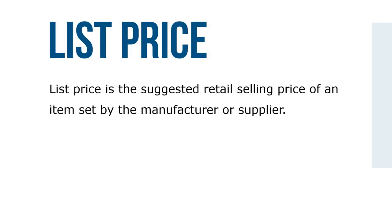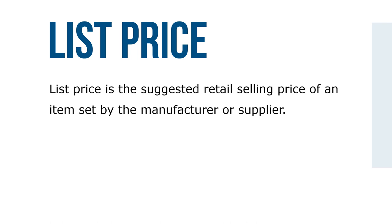List price is the suggested retail selling price of an item set by the manufacturer or the supplier — the original price from which discounts are taken. Manufacturers print catalogs showcasing their merchandise. Oftentimes, these catalogs contain the manufacturer's suggested list or retail prices. Businesses in the trade receive price sheets from the manufacturer listing the trade discounts in percent form associated with each item in the catalog. By issuing updated price sheets of trade discounts, manufacturers have the flexibility of changing the prices of their merchandise without the expense of reprinting the entire catalog.